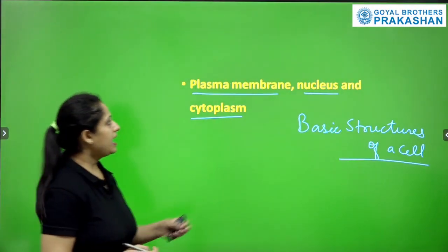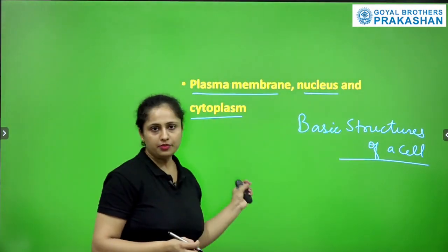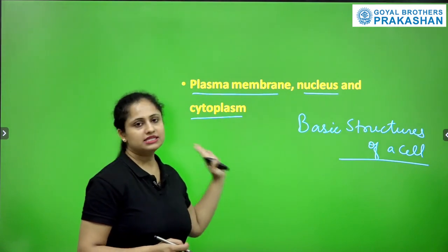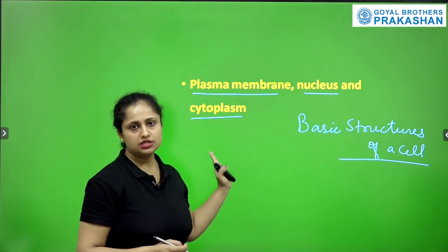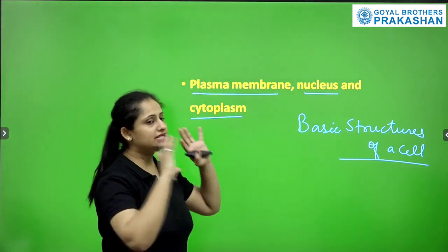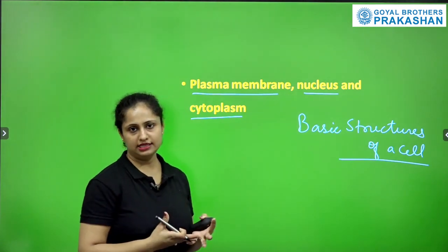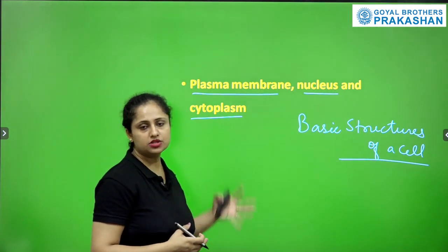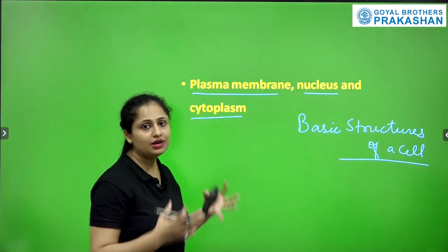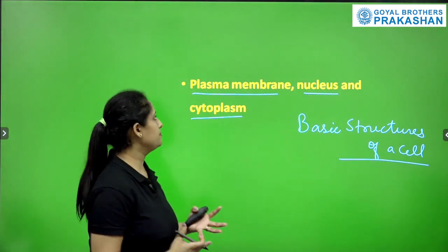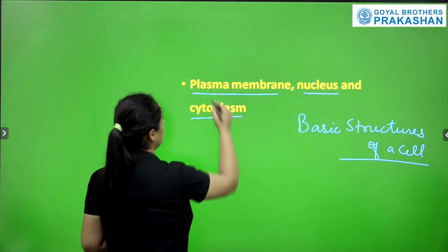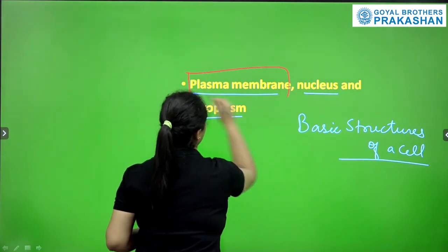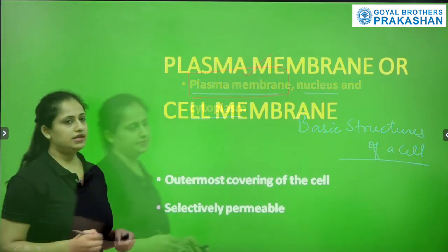We had started from here that there are three basic structures or the basic outline of the cell. These three basic structures form the outline of the cell. First, let's discuss about the plasma membrane.